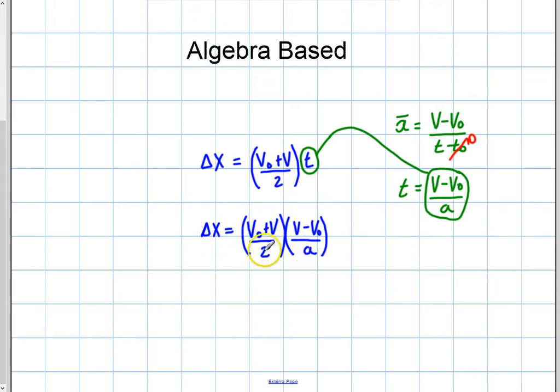So I'm going to take this 2a, multiply it over here. So I'm going to have 2a delta x here is going to equal this group here that we're going to foil out in a minute. v initial plus v final, which we can, it doesn't matter the order that we write that one, but this one does matter: v final minus v initial.